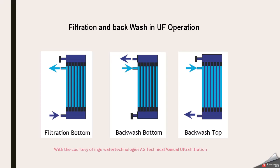In normal filtration, water goes from the bottom, moves from outside the membrane, and purified water comes inside — we get permeate. In backwash bottom mode, the bottom valve is closed; water enters from the permeate path, becomes pressurized, and flows from outside to inside going upward to clean the membrane. In backwash top mode, the top valve is closed and water still enters from the permeate path, exiting as reject from the bottom.